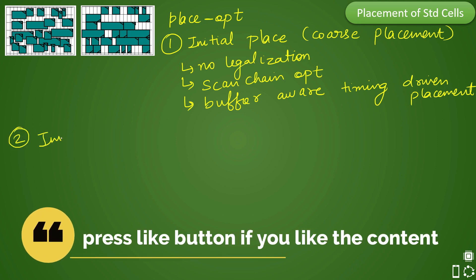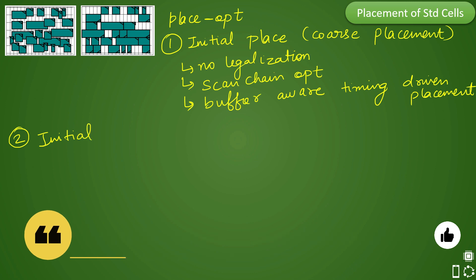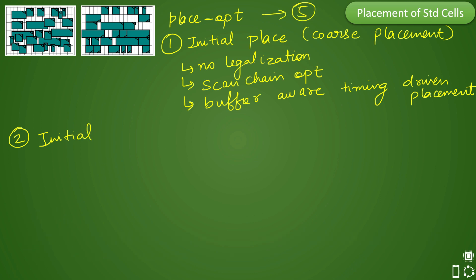The second stage is initial DRC. There are five total stages of place-opt. In the initial DRC stage, high fan-out net buffering is performed. High fan-out nets in the design will be buffered. The scan chain is one high fan-out net and always has the highest priority, so scan chain buffering is done first in the initial place itself.